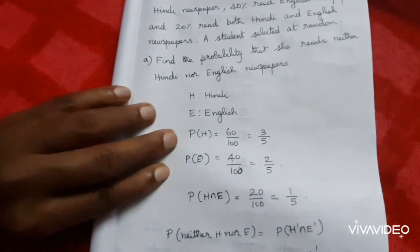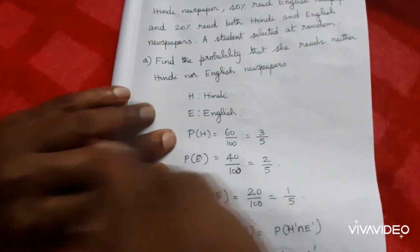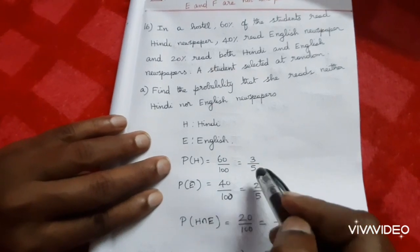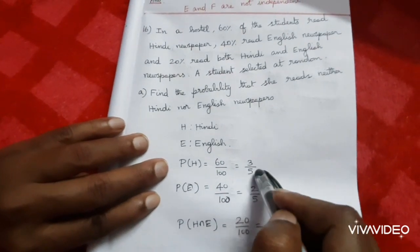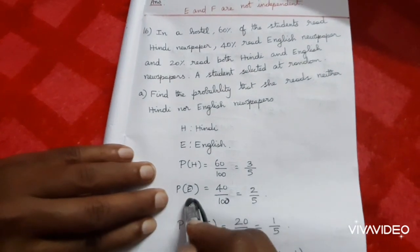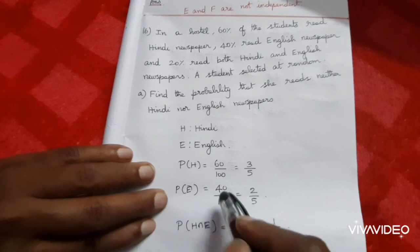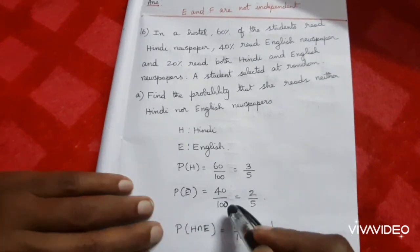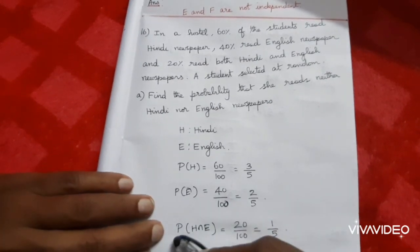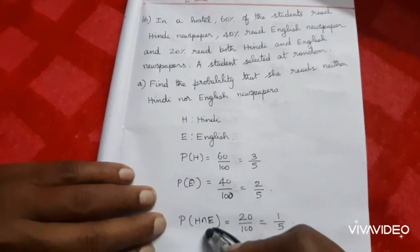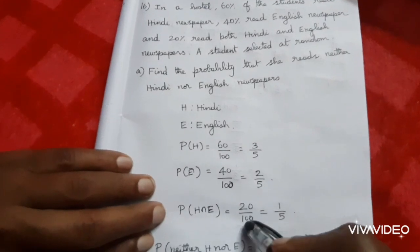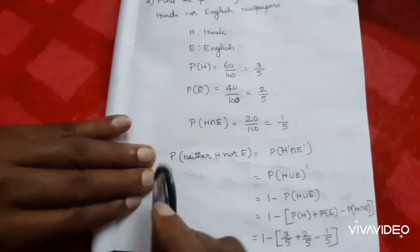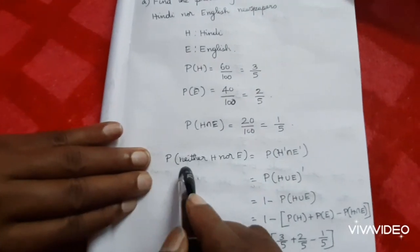Probability of H equals 60/100, which equals 3/5. Probability of E equals 40/100, which equals 2/5. Probability of H intersection E equals 20/100, which equals 1/5.